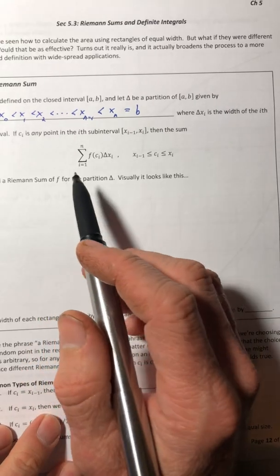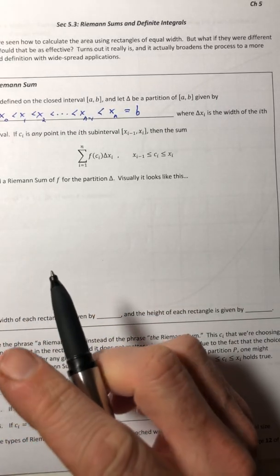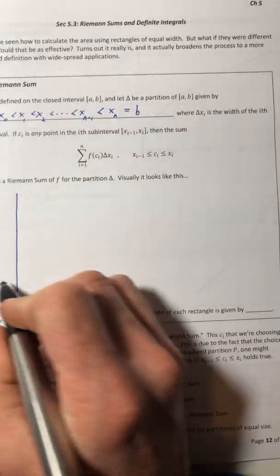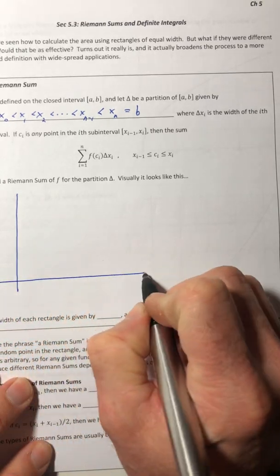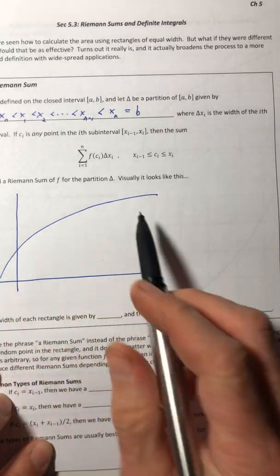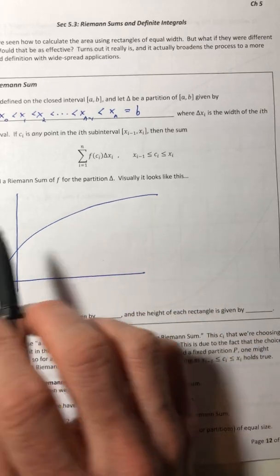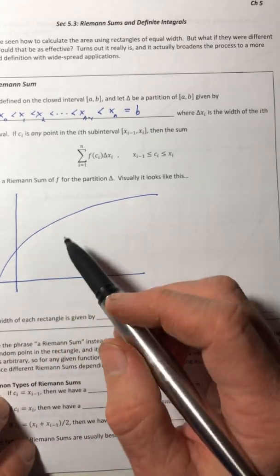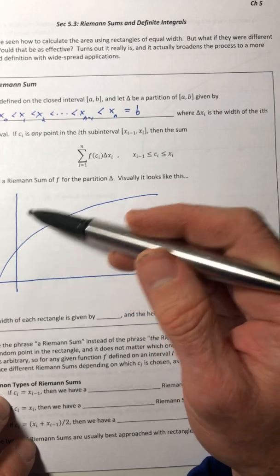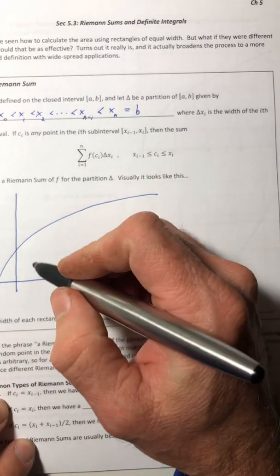All right, that was a lot of stuff in there. So what on earth is this thing? So visually it's going to look something like this. You can take any curve and we're going to make it kind of simple just because. So this is saying that I can create rectangles of different widths. They can be outside of the region. They can be totally inside. They just don't have to be the same width.